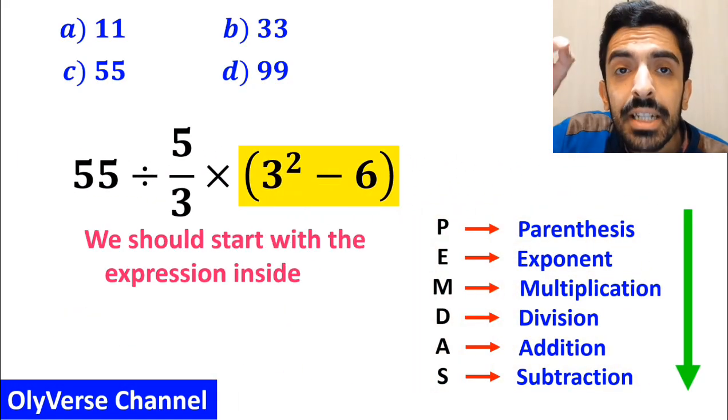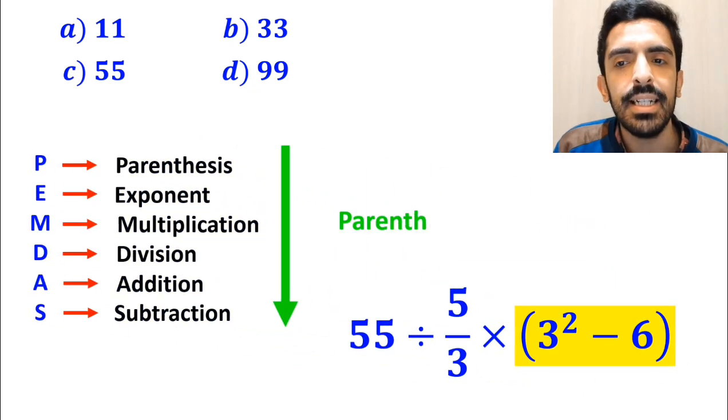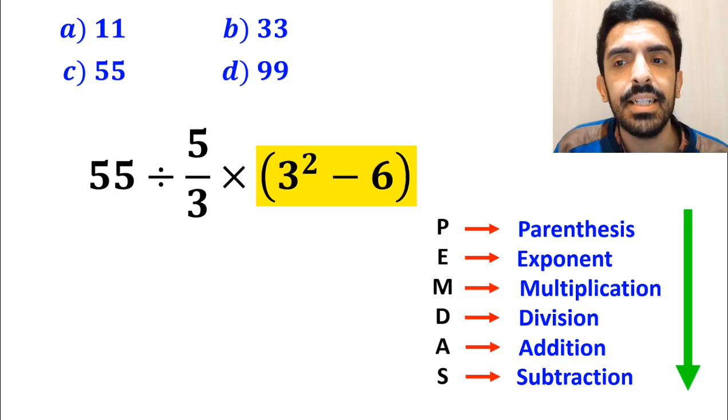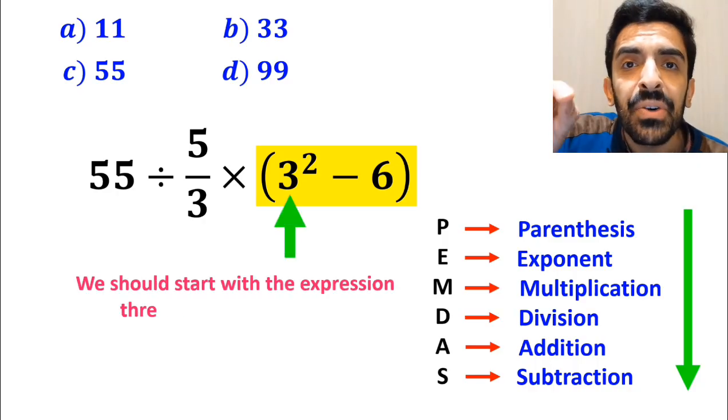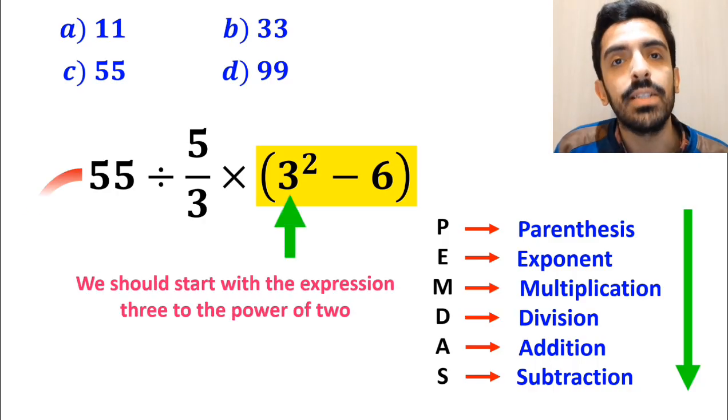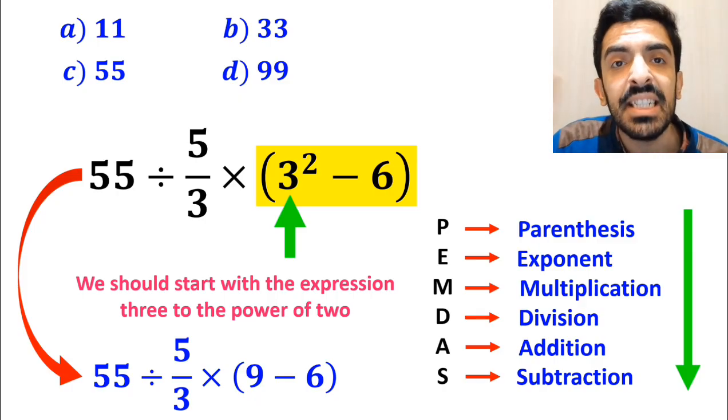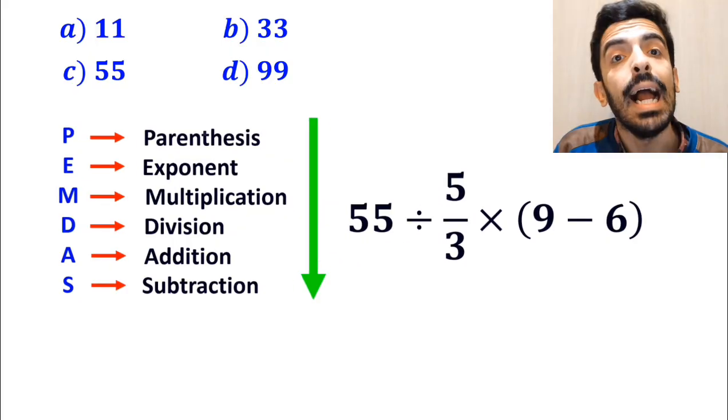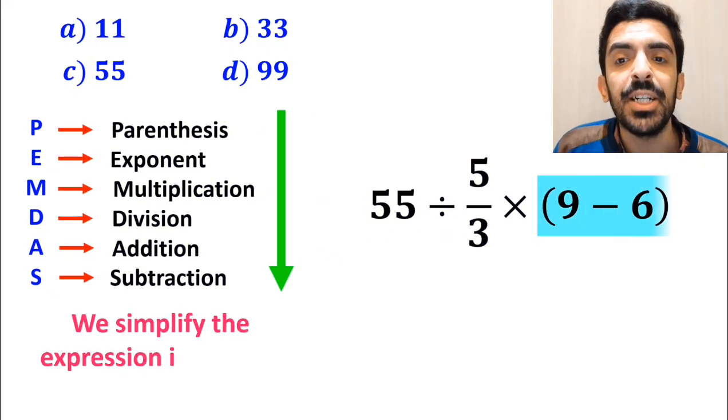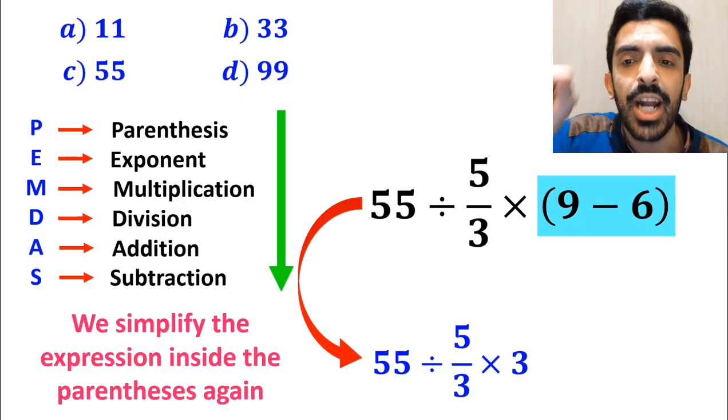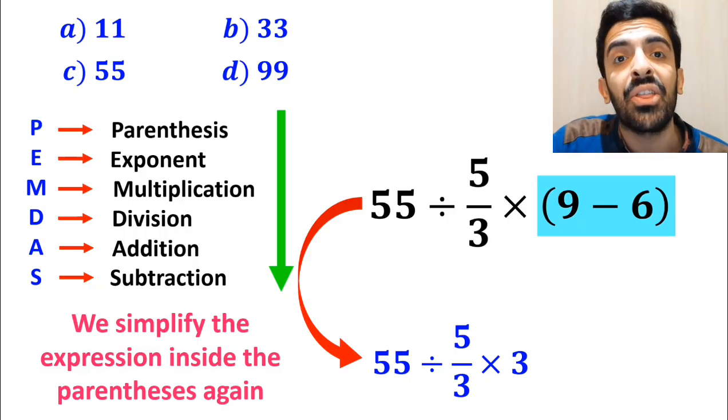We should start with the expression inside the parenthesis, because parenthesis have the highest priority over the other operations. Inside the parenthesis, we should start with the expression 3 to the power of 2. So, instead of this expression, we can write 55 divided by 5 over 3 multiplied by 9 minus 6 inside the parenthesis. In the next step, we simplify the expression inside the parenthesis again, and we can write 55 divided by 5 over 3 multiplied by 3.